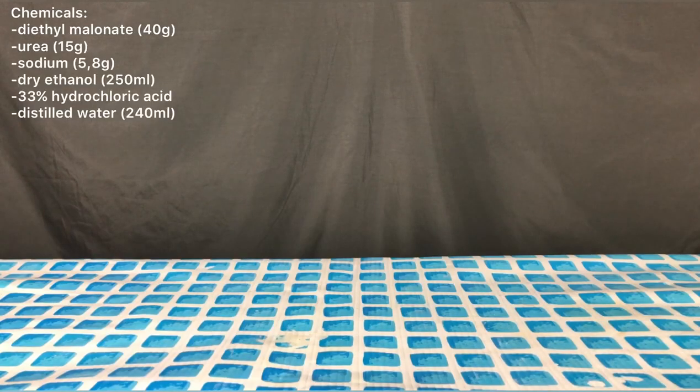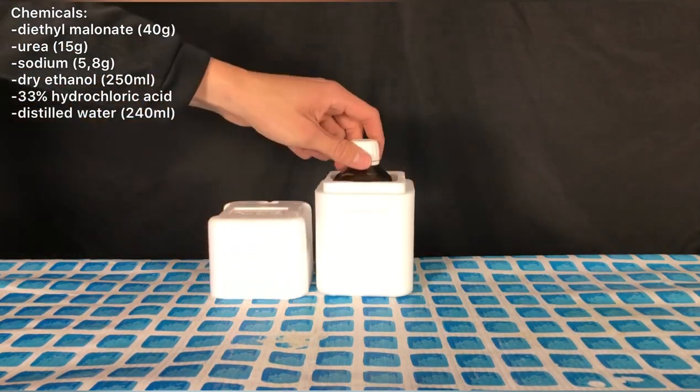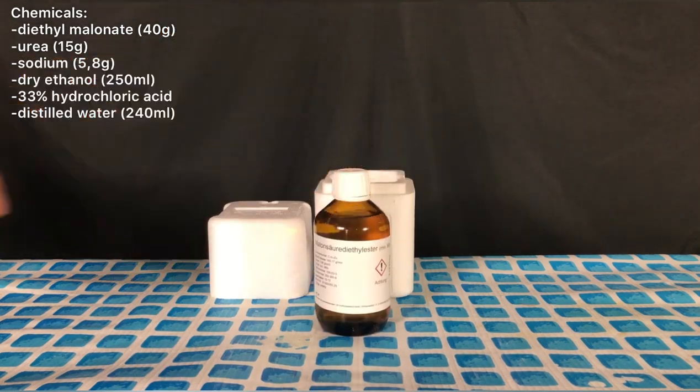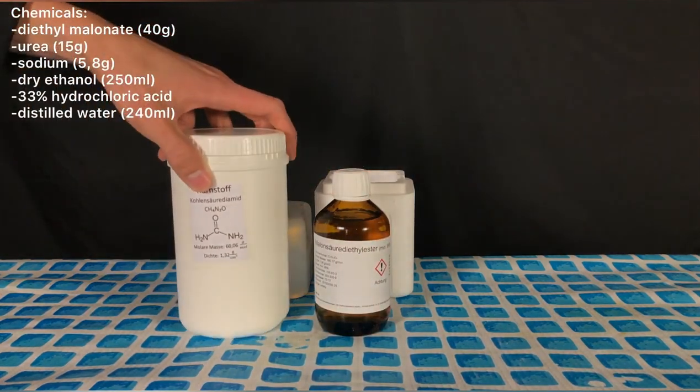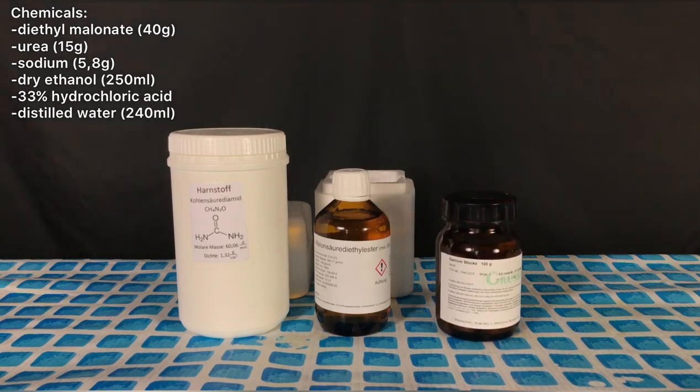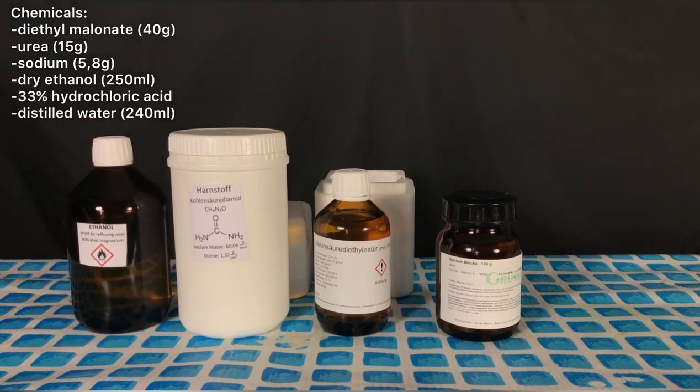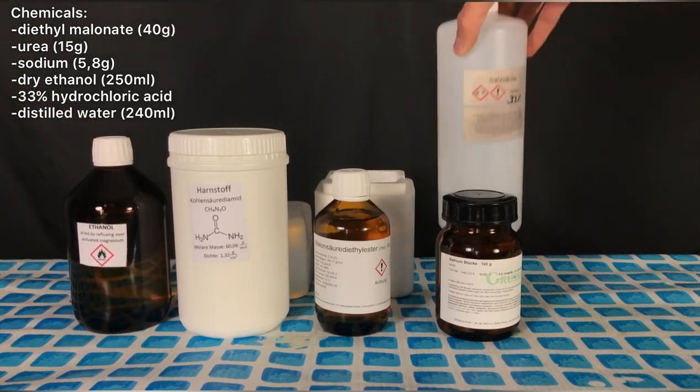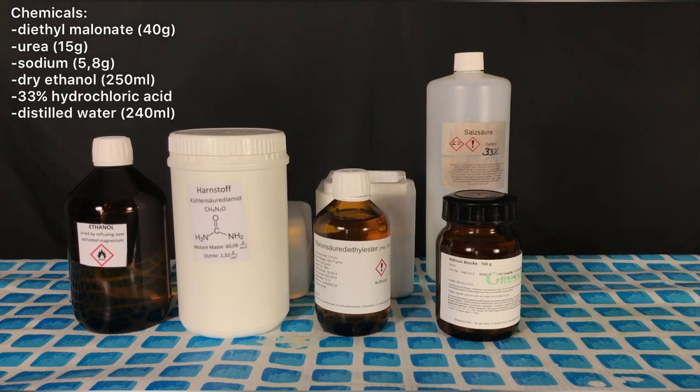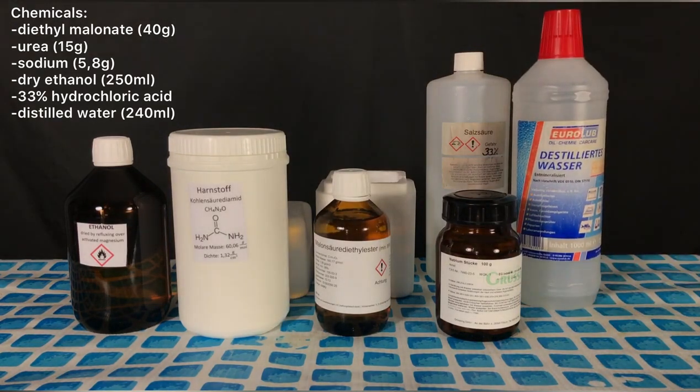For this project you will need 40 grams of diethyl malonate, 15 grams of urea, 5.75 grams of sodium (we used 5.8 grams), 250 milliliters of dry ethanol, 33% hydrochloric acid, and lastly 240 milliliters of distilled water.